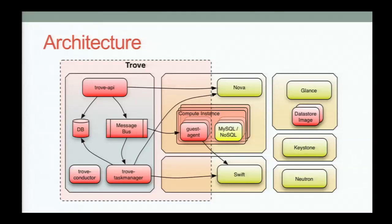A little bit about the architecture. Everything other than the guest agent in red is OpenStack, and we view that as a black box. The Trove API receives REST calls from users and talks to the task manager, which is the brains of the system. The task manager instruments things like backups, pushes things to Swift, talks to Nova to create the instance — all the standard stuff for building, installing, and securing a data store.